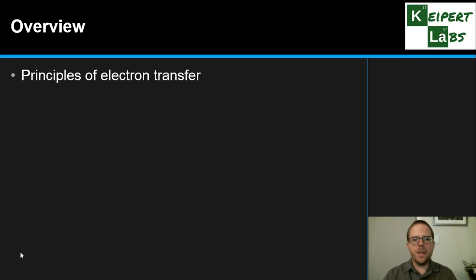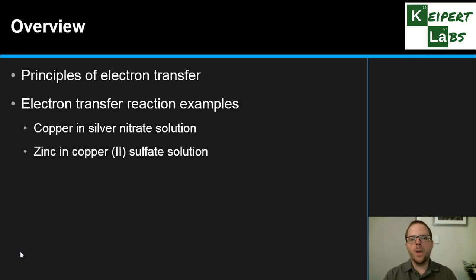So what we're going to be talking about in this video: we're going to go through the principles involved in electron transfer, we're going to go through two particular examples of reactions where this is happening - copper in silver nitrate and zinc in copper(II) sulfate. We're then going to think about the nature of these metal displacement reactions, which is what this is a type of.